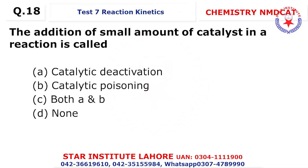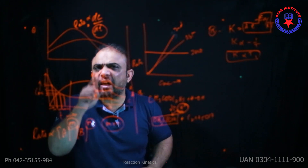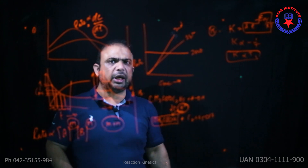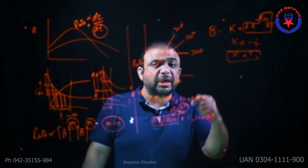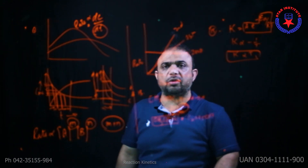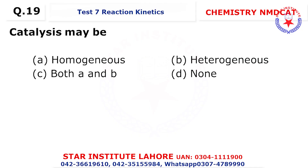Question 17: By the use of a catalyst, as shown in the diagram, the activation energy should decrease. Question 18: The addition of a small amount of catalyst to a reaction — if you add an impurity it would be catalytic poisoning, but if you add a catalyst it is called catalysis.